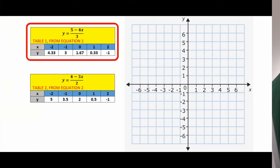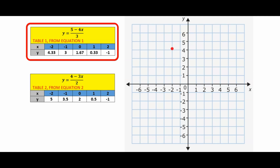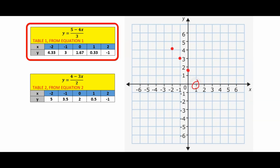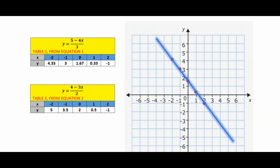For table 1 from equation 1: when x is minus 2, y is 4.3; when x is minus 1, y is 3; at x equals 0, y is 1.67; when x is 1, y is 0.33; and when x is 2, y is minus 1. With a straight ruler, join all the points and try to extend the line to cover other ranges of integers not on the table.